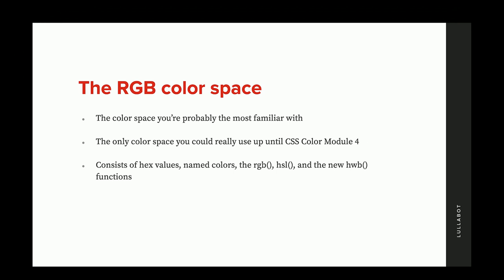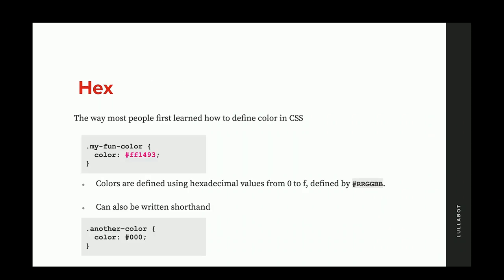The first one is hex values — probably the one you first learned to define color in CSS. You do a hexadecimal value between 0 to F, with the first two being red, the second two being green, and the third two being blue. You can also write this shorthand — if it's all zeros, like defining black, you can just do 0, 0, 0 instead of all six digits. There's other stuff you can do with hex, but that's the basics.